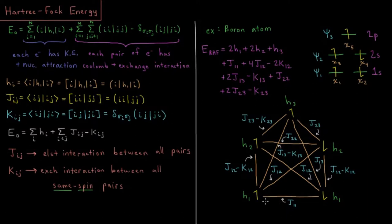So the electrons in psi1 repel each other, J11, through the Coulomb interaction, not the exchange interaction because their spins differ. These two electrons have Coulomb and exchange. They're the spin-up electrons in spatial orbital 1 and 2, J12 minus K12 from this sum here.